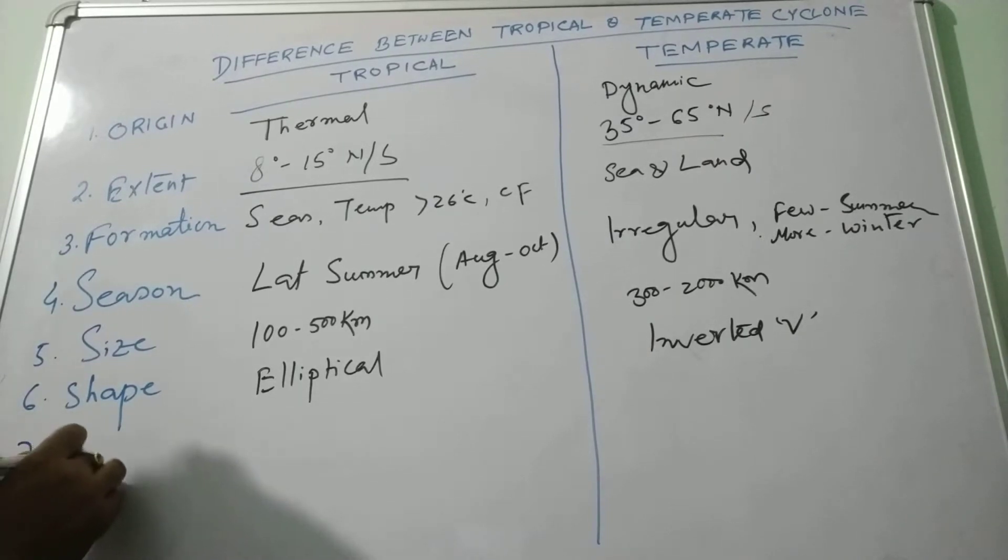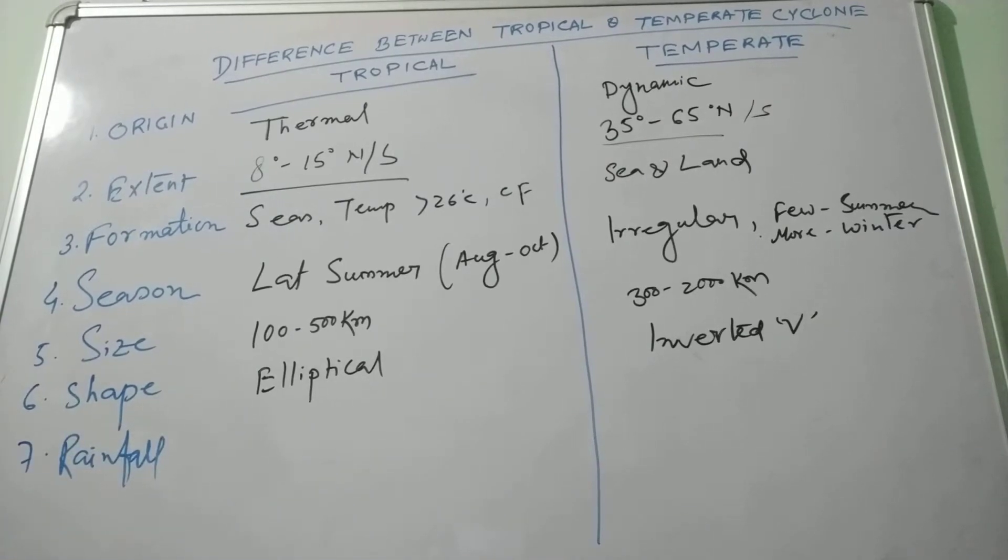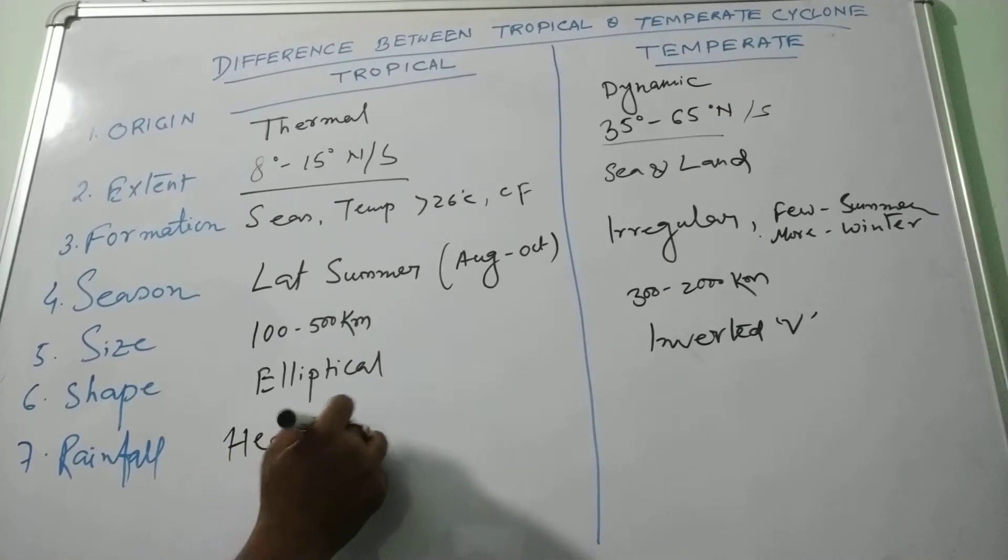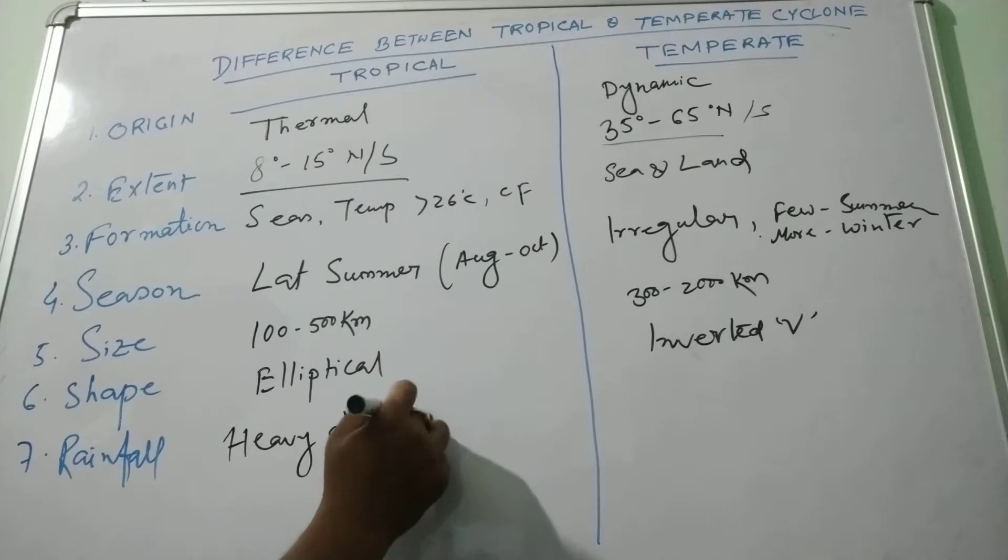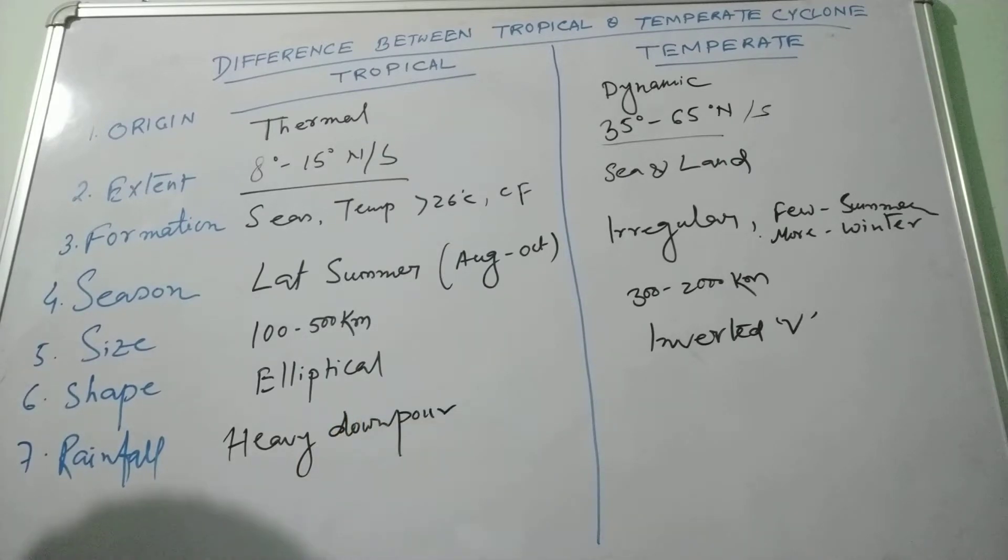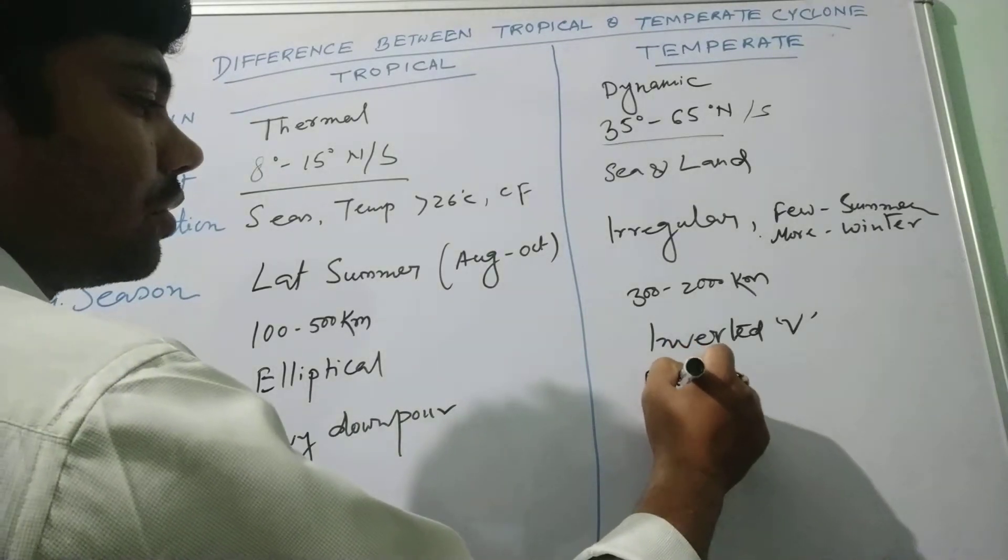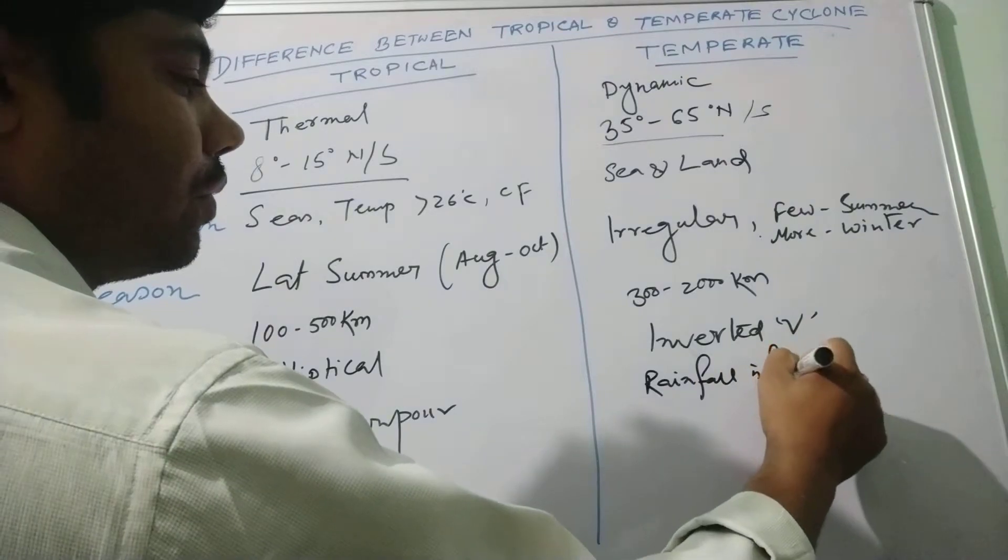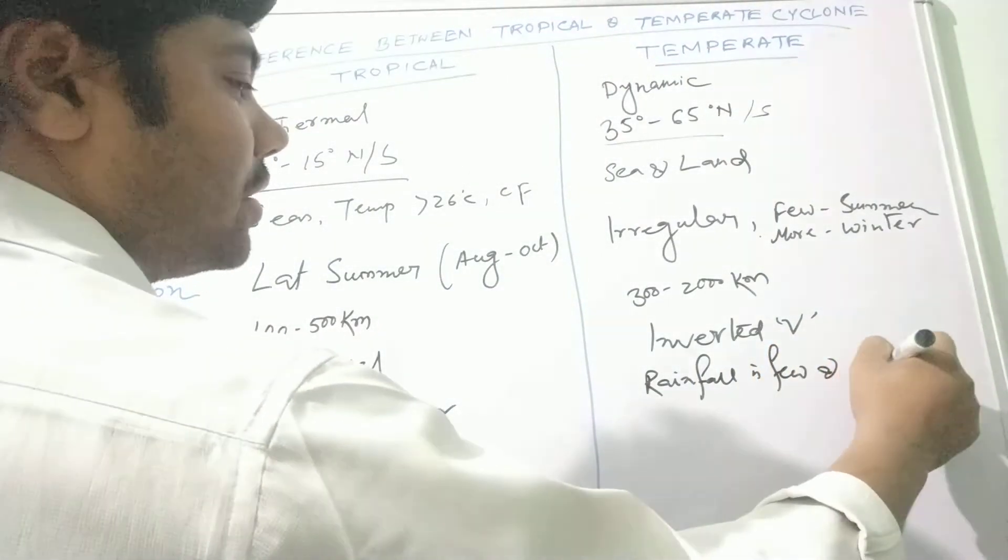Rainfall condition. In case of the tropical cyclone, heavy downpour occurs, whereas rainfall is continuous, few and continuous for many days in temperate cyclone.